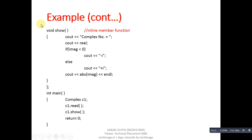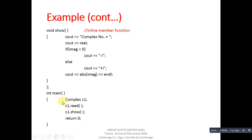Continuing with the example, another function is show, which displays the complex number on the console. An if condition checks whether the imaginary value is less than zero or greater than zero — if less than zero, minus i is printed; if greater than zero, plus i is printed. This is also an inline member function because the definition is inside the class. Then after the class termination, the main function declares object c1 and calls the read and show functions.